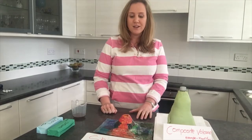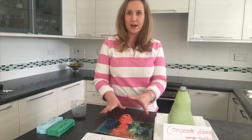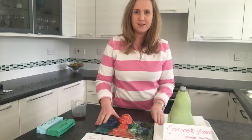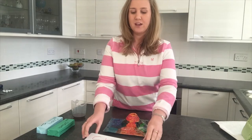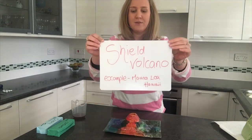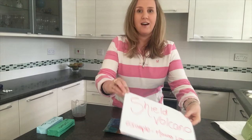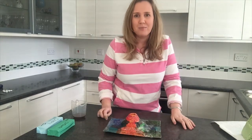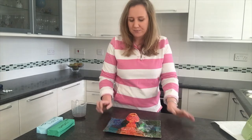Today we're going to look at two different types of volcanoes: shield volcanoes and composite volcanoes. First we're going to concentrate on the shield volcano. An example of a shield volcano is Mauna Loa in Hawaii. All the little Hawaiian islands are made up of volcanic activity, which is quite interesting.